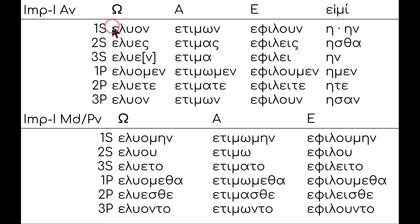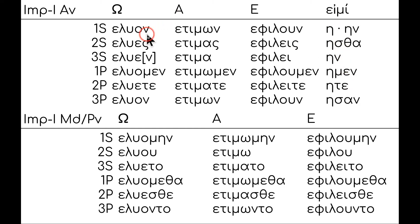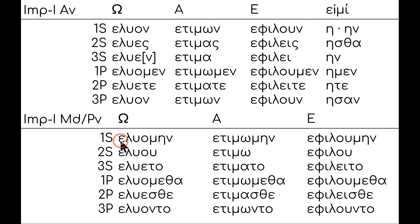The imperfect has an epsilon augmentation at the beginning, or a lengthening of the initial vowel. The irregular form of eimi is ēn: ēn, ēs, ēn, ēmen, ēte, ēsan — that's a totally different form. The regular imperfect endings are: -on, -es, -e, -omen, -ete, -on. For alpha contracts, the alpha stays and gets lengthened, combining with the normal endings: -ōn, -ās, -a, -ōmen, -āte, -ōn.